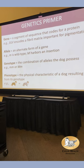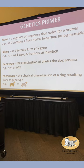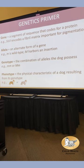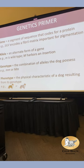Genotypes are the combination of alleles that the dog possesses. For merle, little m is wild type, and big M is the merle allele. Your genotype could be little m/little m, or big M/big M — those are homozygotes because they have two of the same versions. And big M/little m would be a heterozygote — two different versions.